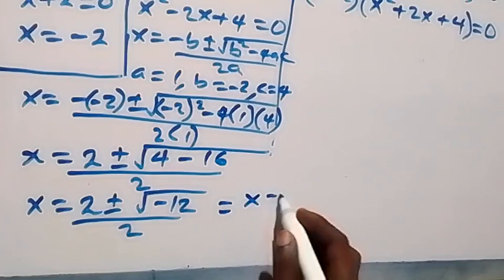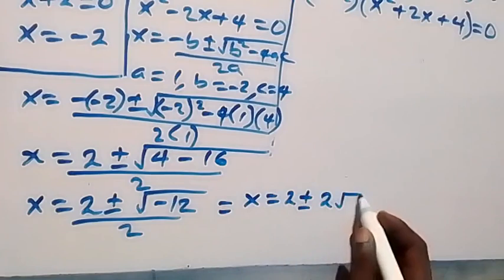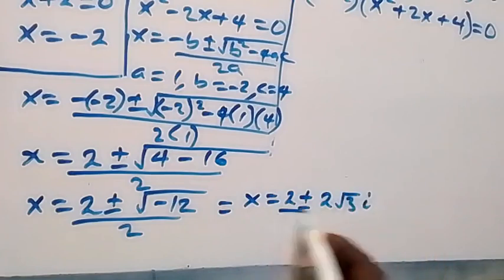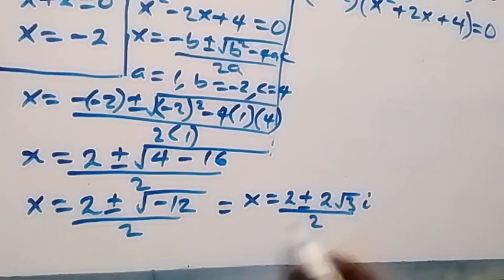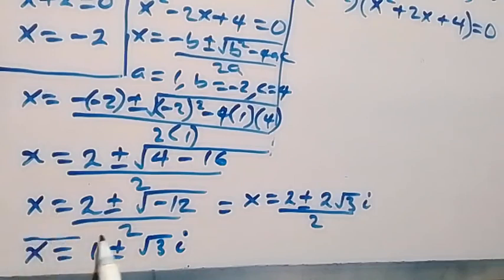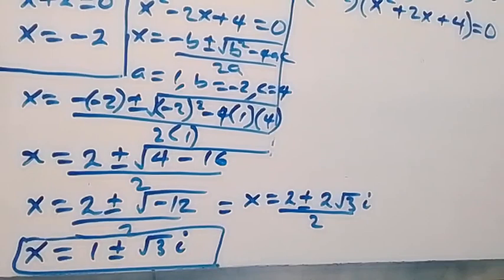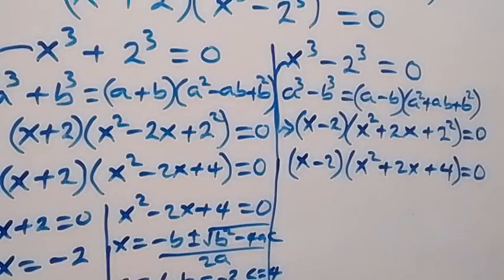And root of minus 12 simplifies to 2 root 3 i, so this becomes x equals 2 plus or minus 2 root 3i over 2. The 2 cancels, giving x equals 1 plus or minus root 3i. So we have two complex solutions from Case 1.